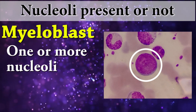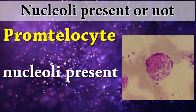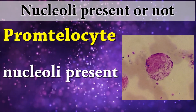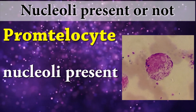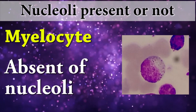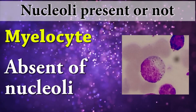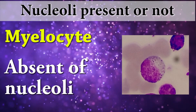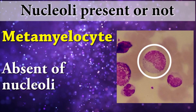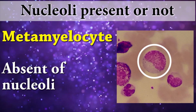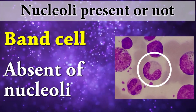Myeloblast: one or more nucleoli present. Promyelocyte: nucleoli present. Myelocyte: absent of nucleoli. Metamyelocyte: absent of nucleoli. Band cell: absent of nucleoli.